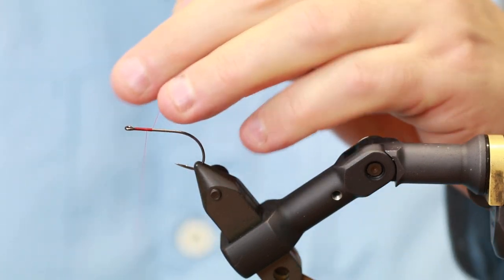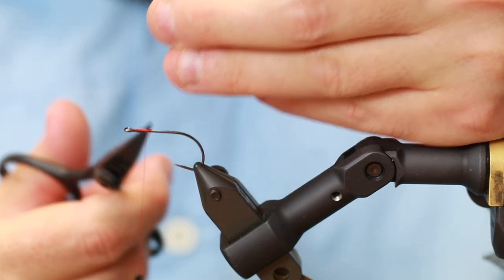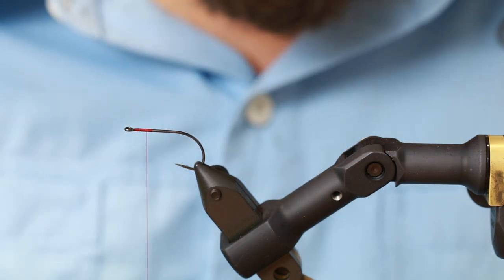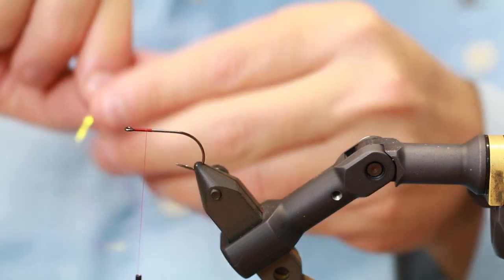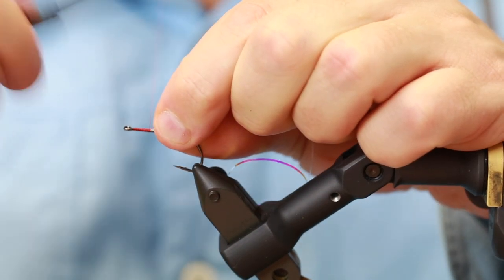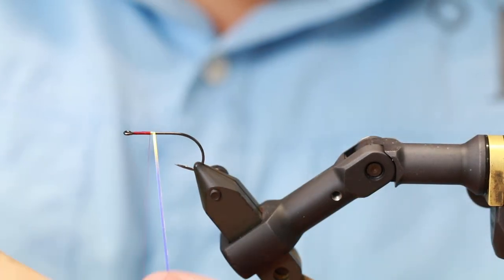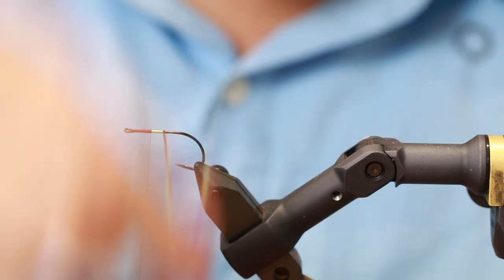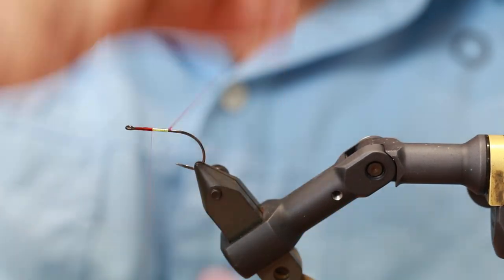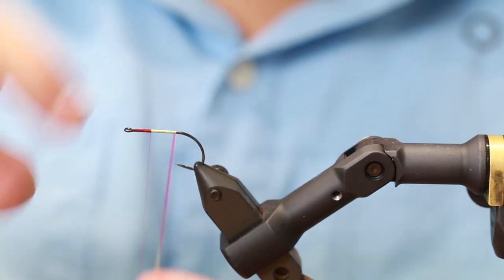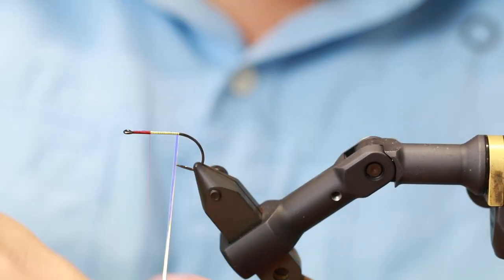In order to give this a bit of sparkle and shine, I'm going to take some opal flat tinsel and just cover the rest of the body here like this—that's just to give it a bit of bling. I'm going to fairly easily and fast cover the hook shank with this opal one to give it kind of a sideline effect and a bit of shine.